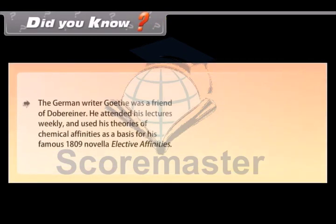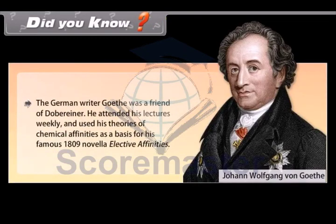Did you know? The German writer Goethe was a friend of Dobereiner. He attended his lectures weekly and used his theories of chemical affinities as a basis for his famous 1809 novella, Elective Affinities.